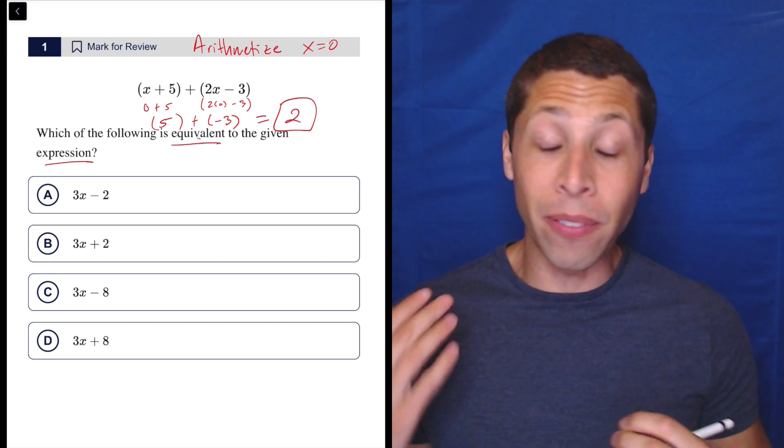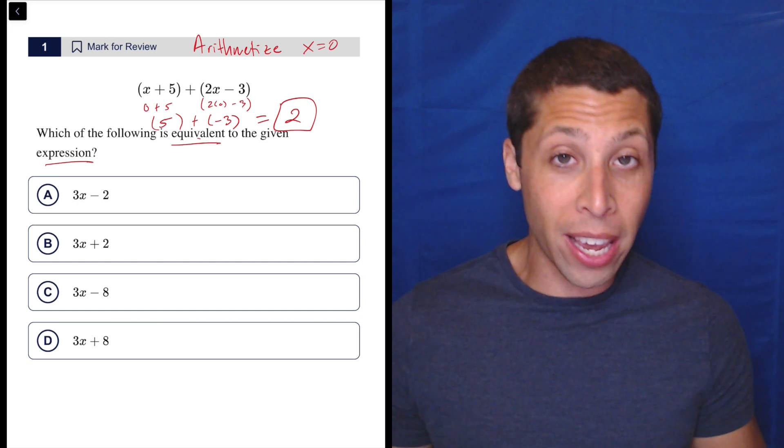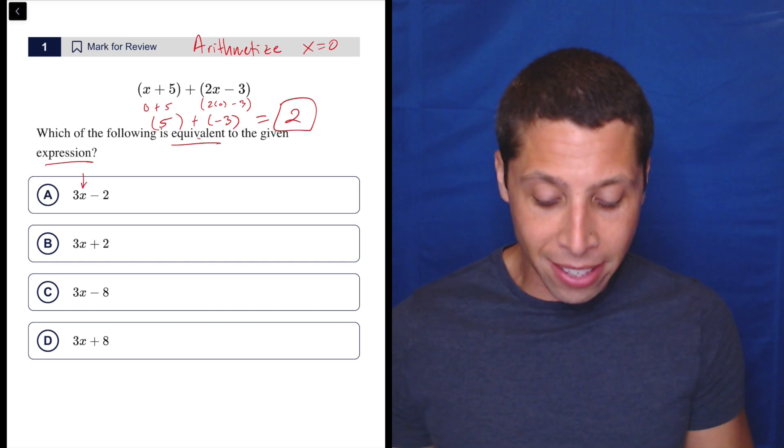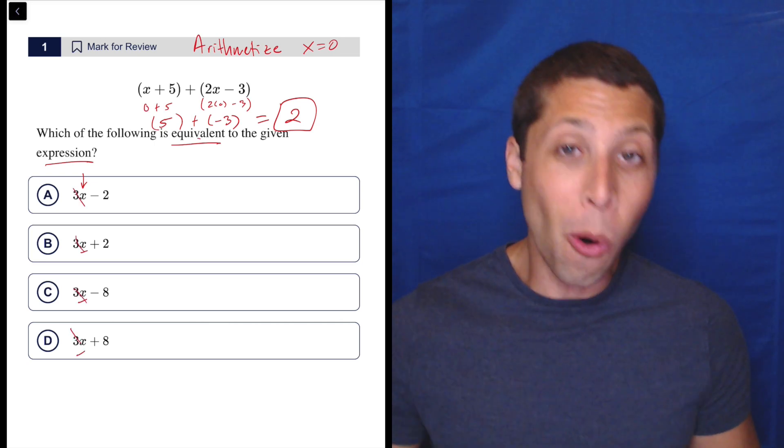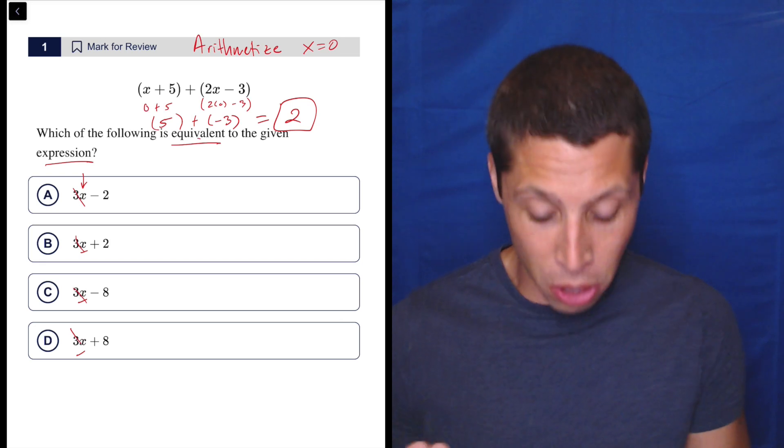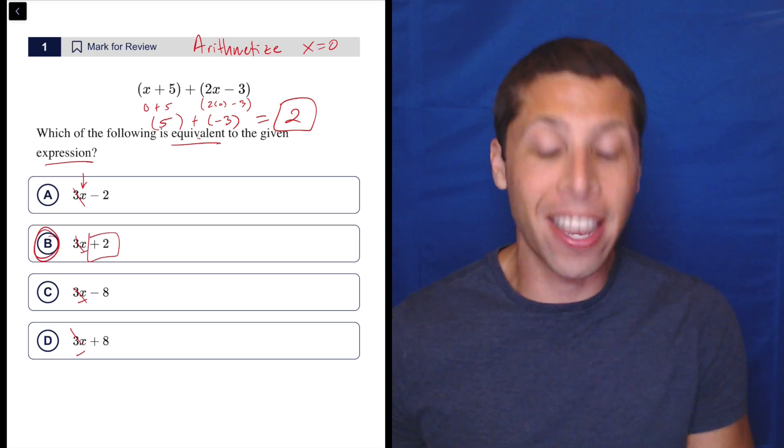So the benefit of this is that we can very quickly look at the answers and see, okay, if I put 0 in for all of these x's, it's also going to kill these terms. And since only one would have the number 2 right here, that's got to be the answer.